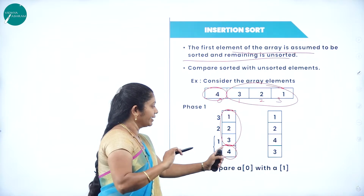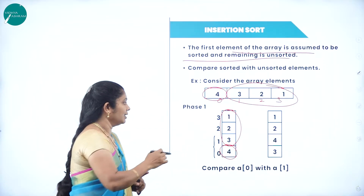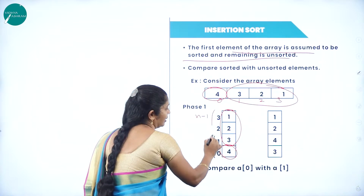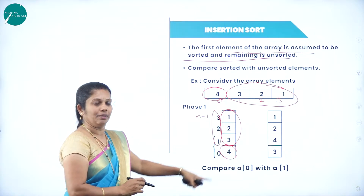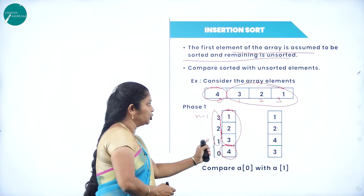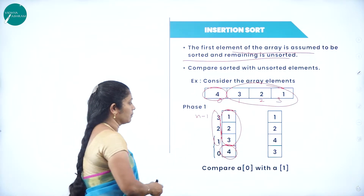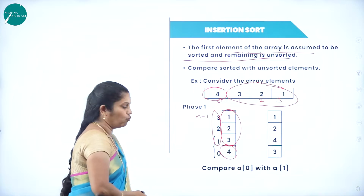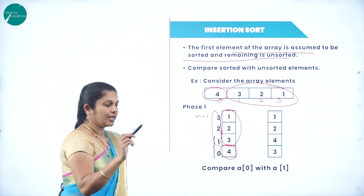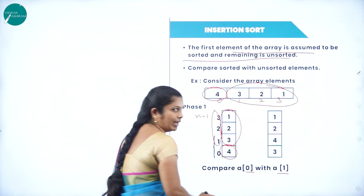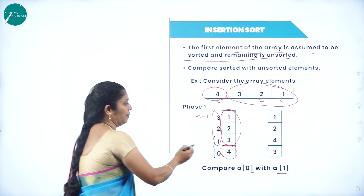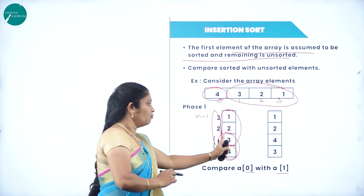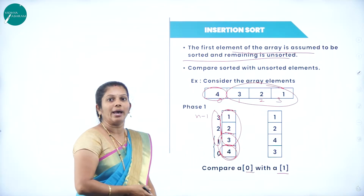In the first phase, we compare the first element with the second element — that is, A of 0 and A of 1. The comparison takes place from position 1 till the last one, N minus 1. In the first phase, we compare only two elements: A of 0 and A of 1. If A of 1 is less than A of 0, then swapping will take place.